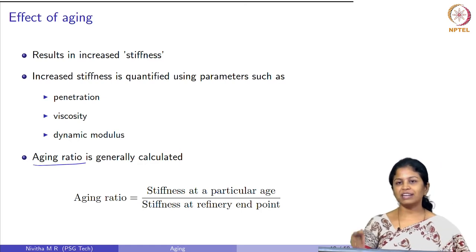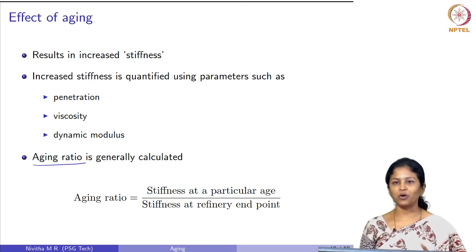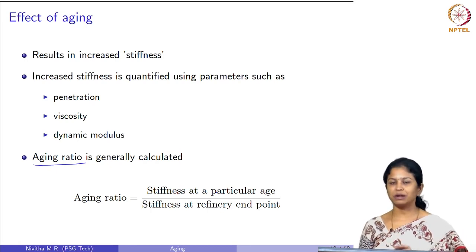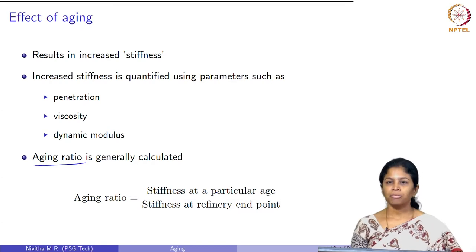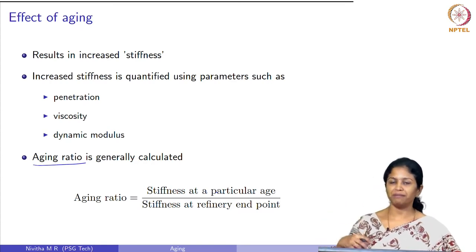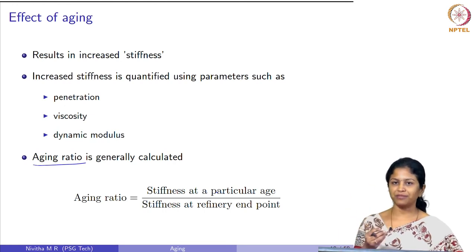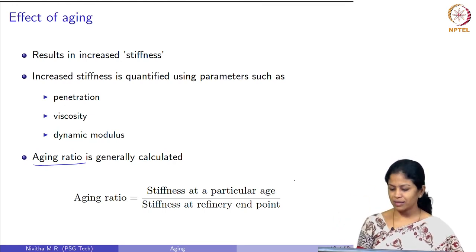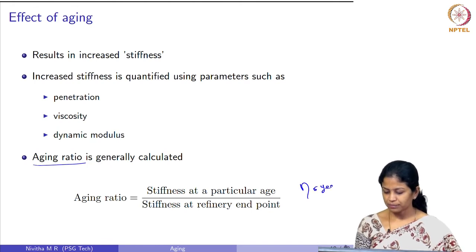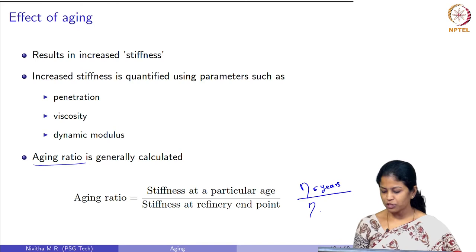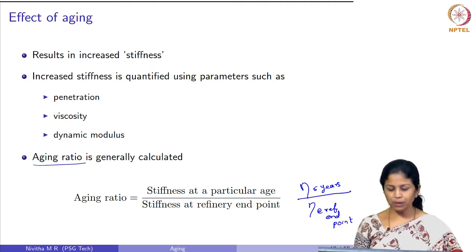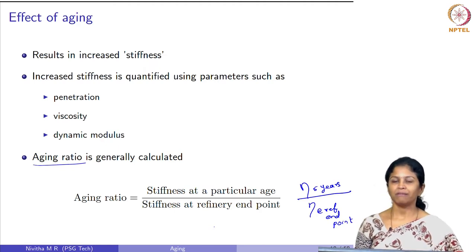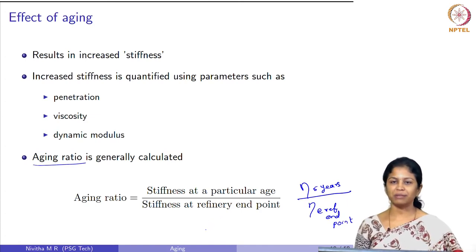The aging ratio means stiffness at a particular age. For example, to find the increase in stiffness after the binder has been subjected to 5 years of aging in the field, you take a core from the pavement after 5 years, extract bitumen, and measure its viscosity. This viscosity at 5 years divided by the viscosity at the refinery end point gives the aging ratio. This aging ratio is used in specifications to limit the amount of aging the material undergoes after short-term or long-term aging.